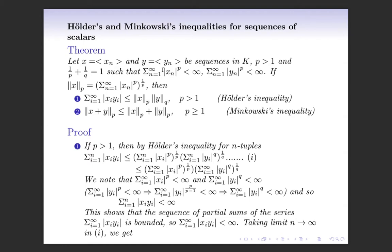Let us prove Hölder's inequality. If p > 1, then by Hölder's inequality for n-tuples of scalars proved earlier, we have the summation of |x_i y_i| for i = 1 to n is less than or equal to (summation of |x_i|^p for i = 1 to n)^(1/p) times (summation of |y_i|^q for i = 1 to n)^(1/q).